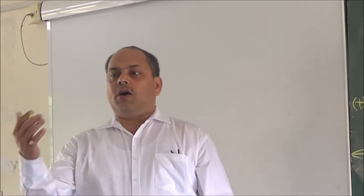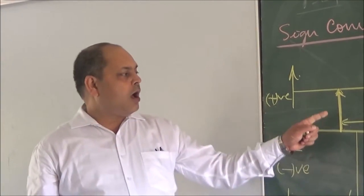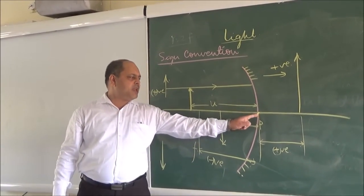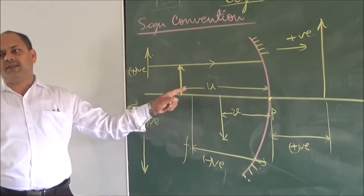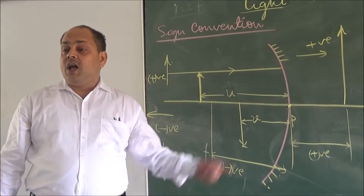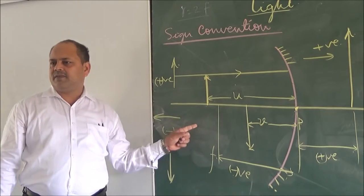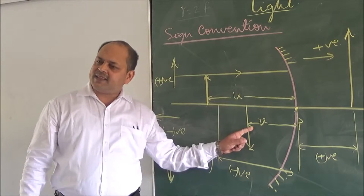So this is the sign convention which we follow — whether in the case of a mirror or in the case of a lens, we follow the same sign convention. That is why the object distance U is always negative, because the object is always placed in front of the mirror. Its distance is measured from the pole P. U is the object distance and it is always negative. When the image is real and inverted, it will always be in front of the mirror, so that distance will also be negative.